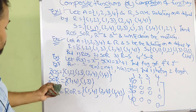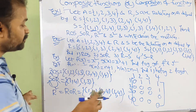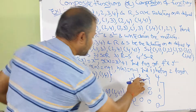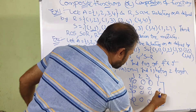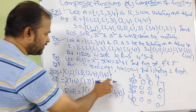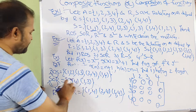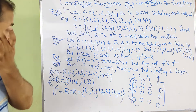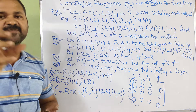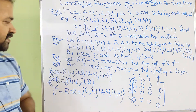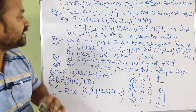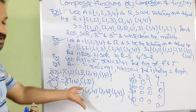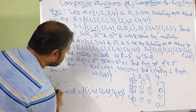Likewise, write the matrix for S∘R. In S∘R we have (1,4): row 1, column 4 — value 1. And (1,3): row 1, column 3 — value 1. Remaining cells are all 0. You can similarly write the matrix for R². This completes the first example.